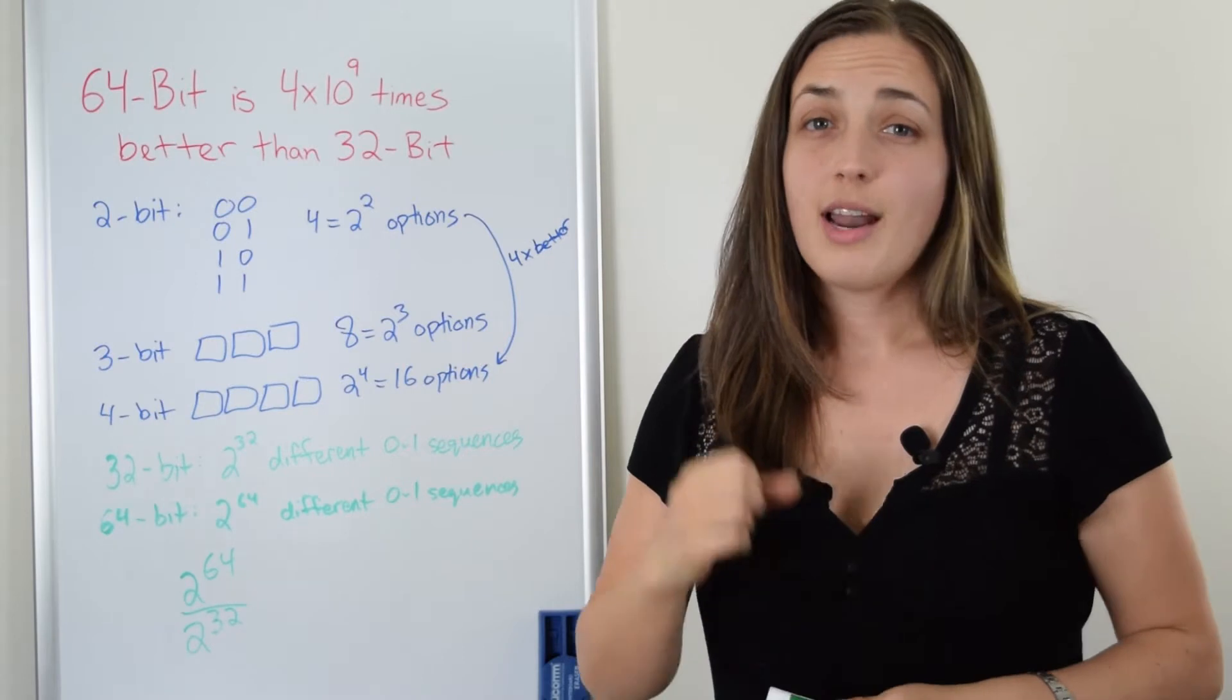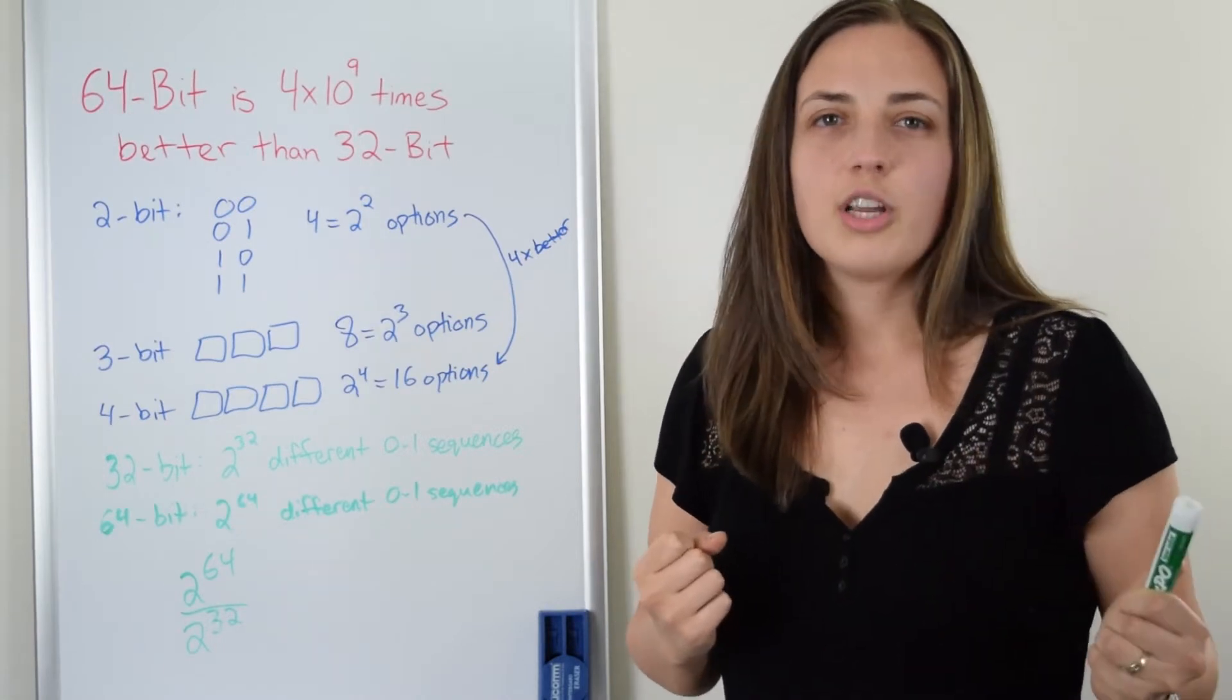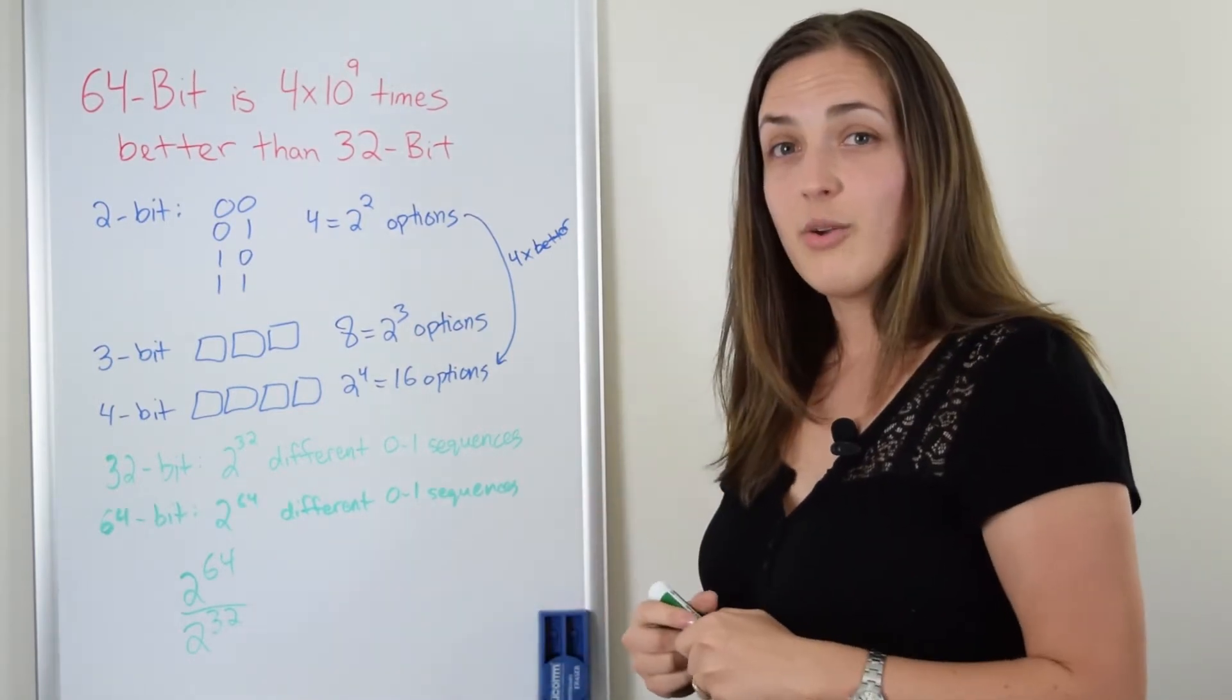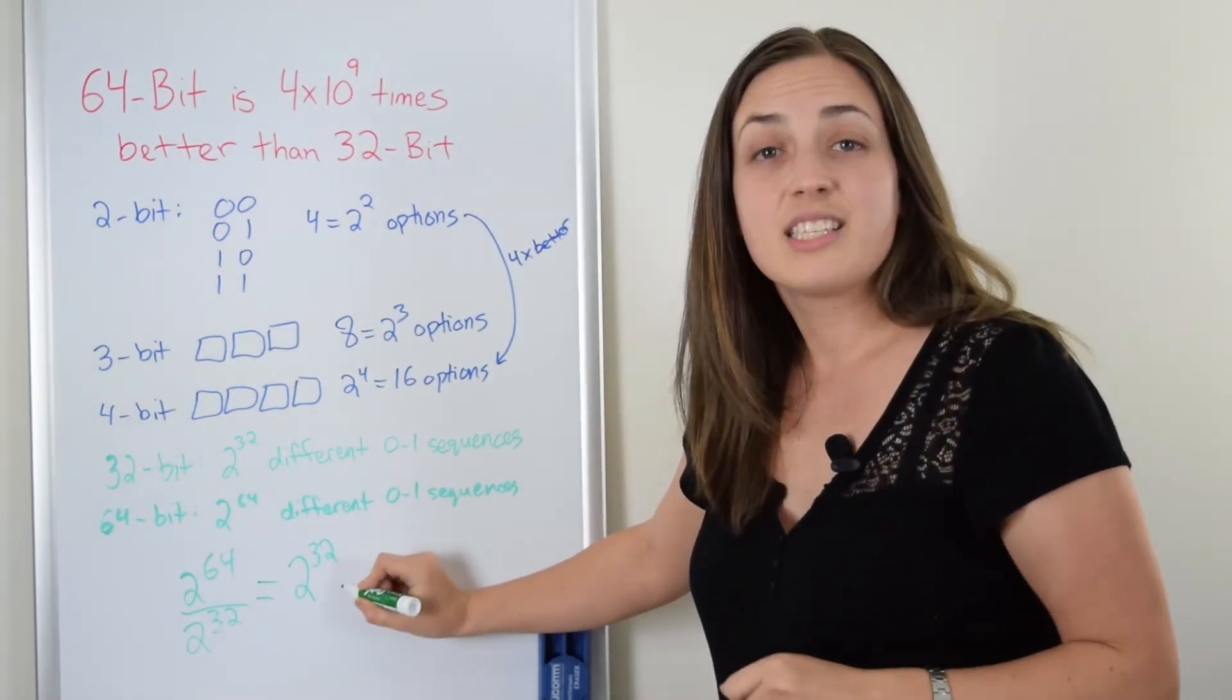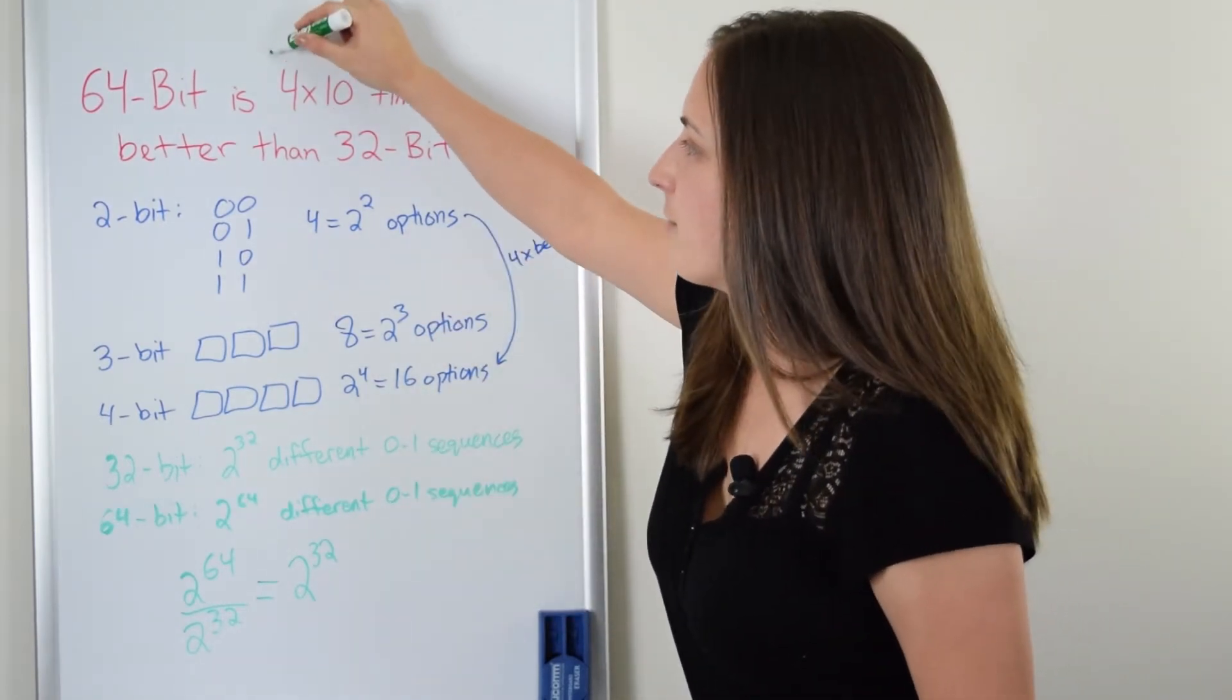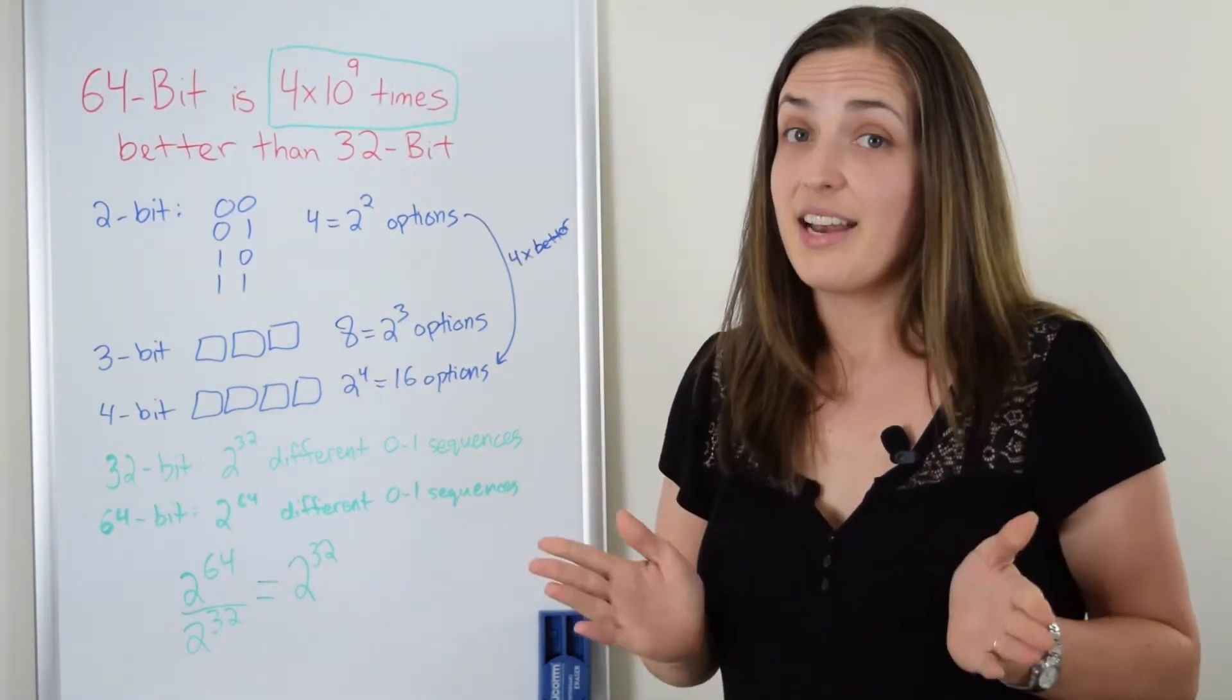So what that means is if you had a 32-bit system and you went to a 33-bit system, you would have doubled. When you go to a 34, you double again and you keep on doubling and you double 32 times by the time you get to a 64-bit system. So what do you end up with? That the 64-bit system is actually two to the power of 32 times better. So that works out to be roughly 4.29 times 10 to the 9 times better. And that is a really big number.